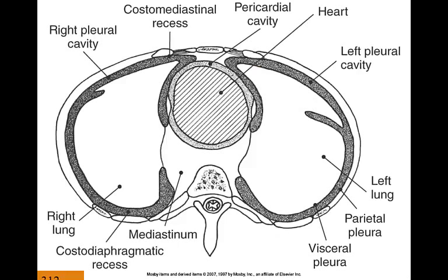Let's talk about pleural cavities. Each lung lies within a single pleural cavity, lined by a membrane called the pleura. This is a serous membrane — it has serum inside of it. The inside gray area is the pleural cavity, and the white parts are your lungs. Here's the right lung and this is the left lung, both inside the pleural cavity.